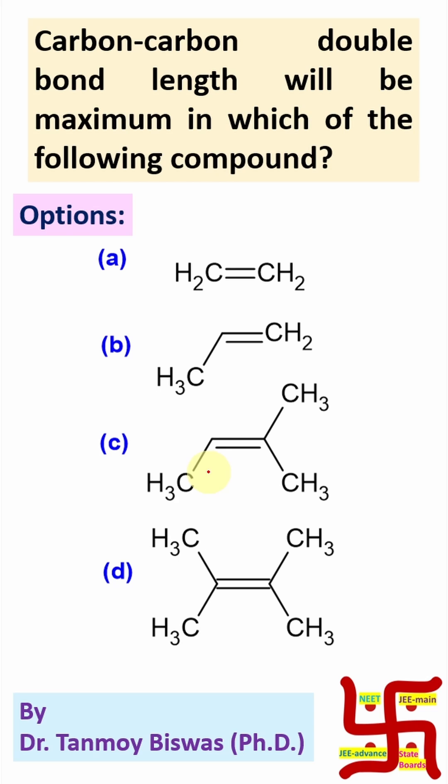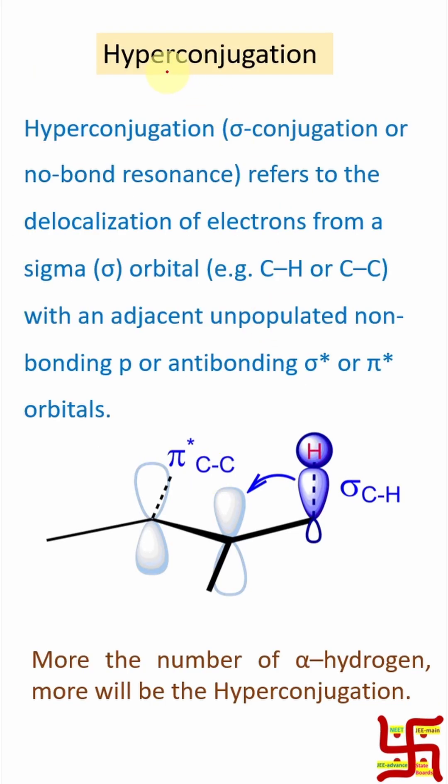So, in order to understand this, first we need to understand about hyperconjugation. What is it? It is actually a sigma conjugation or no bond resonance.